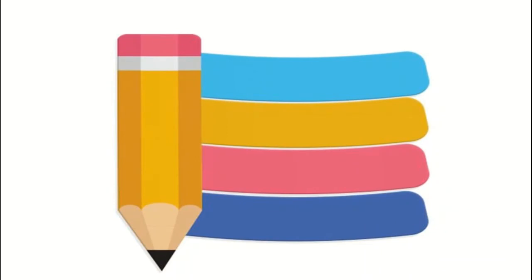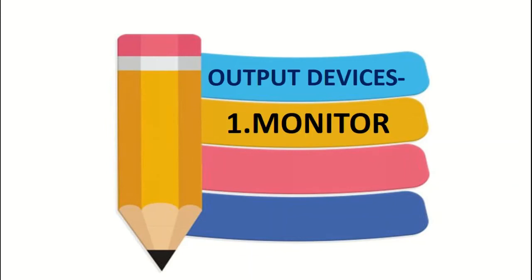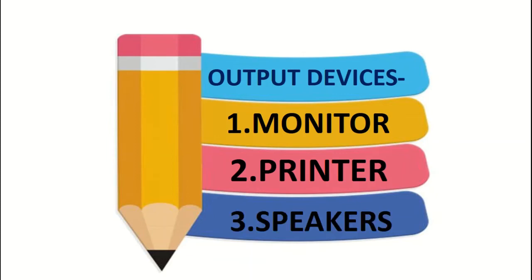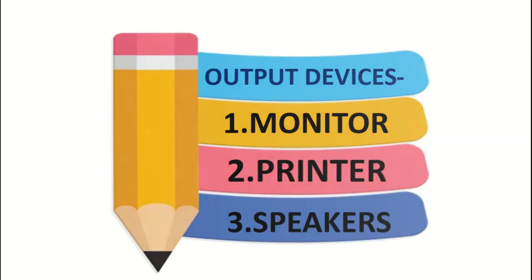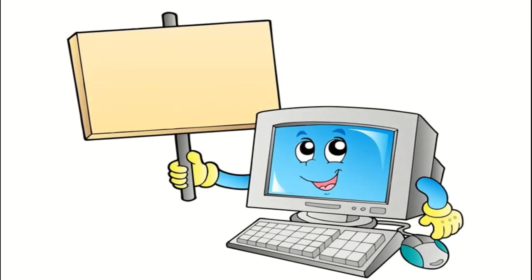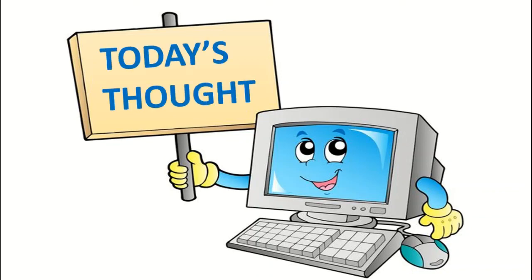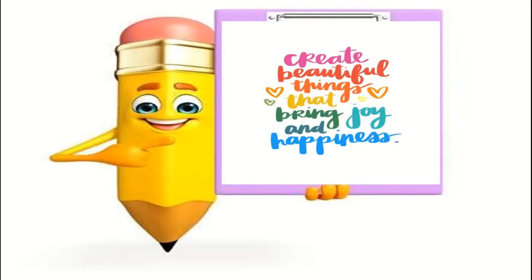So children, with this we have understood the output devices, and they are monitor, printer, and speakers. With this we have completed the understanding part of Lesson Number 6: Input and Output Devices. Children, your homework is to learn and revise. Now it is time for today's thought: create beautiful things that bring joy and happiness.